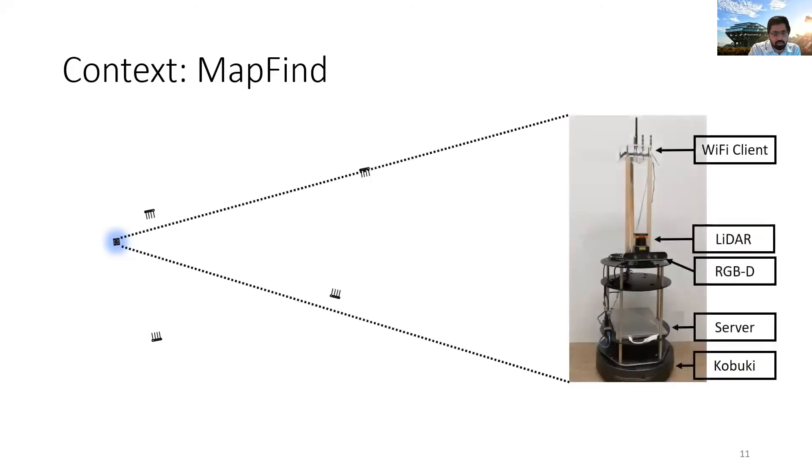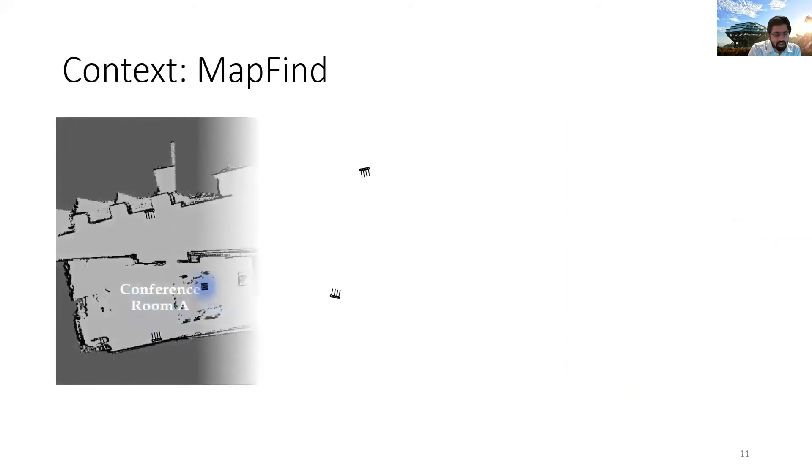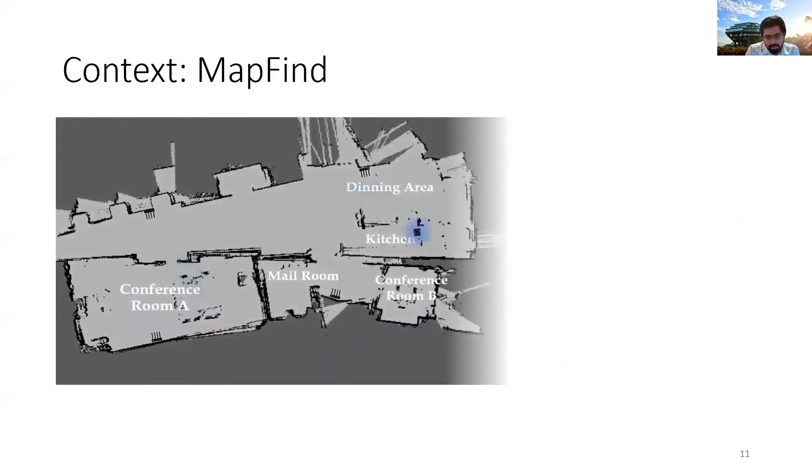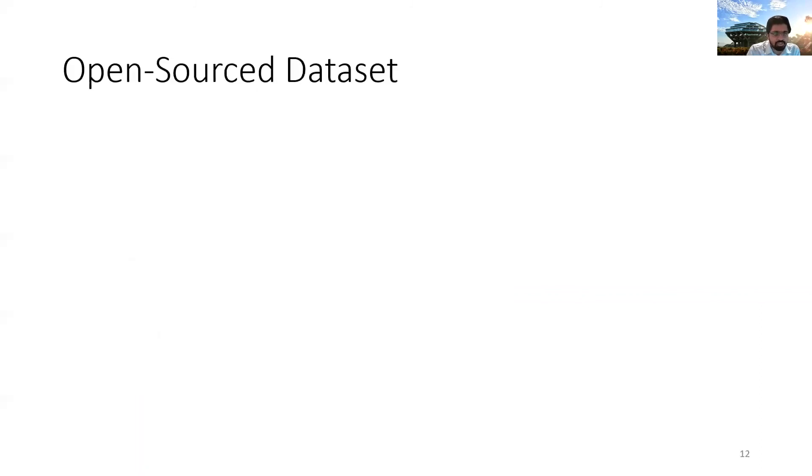So we built this cool bot called MapFind, which has a camera and also a Wi-Fi device that goes around and collects data for our training. And this bot also simultaneously maps the space as you want it, with all those tiny details of desks, chairs, and tables, whatnot, just like your Roomba. And in fact, we have open sourced the data for you.